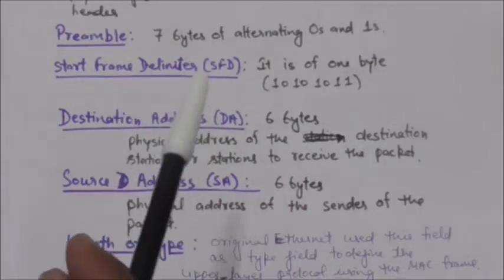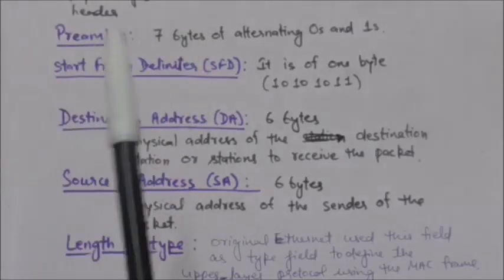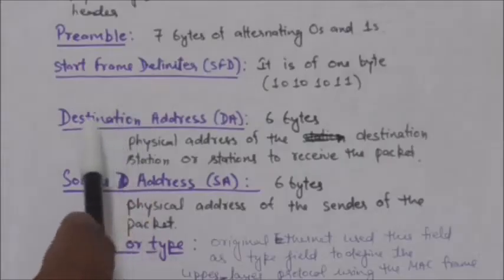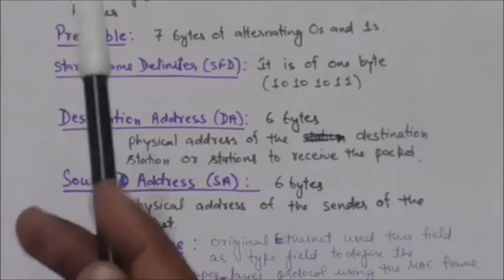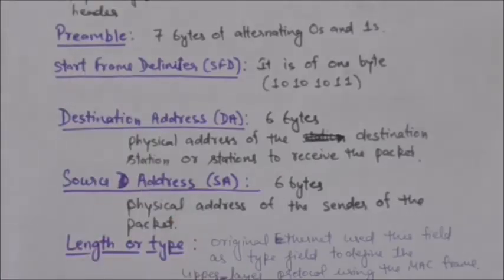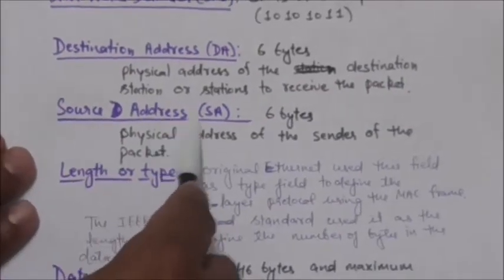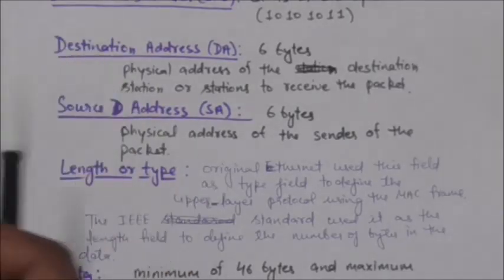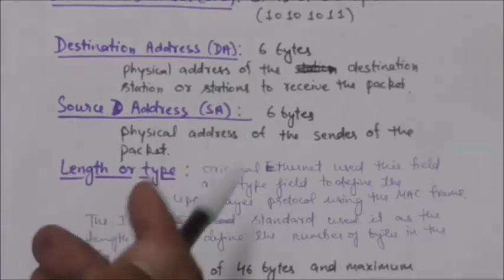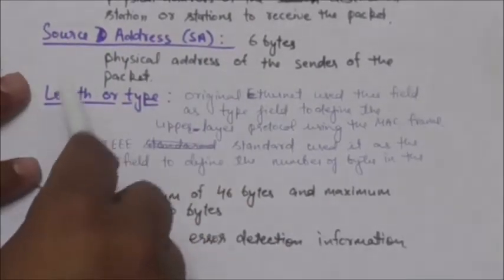The third field is the Destination Address. It is six bytes and contains the physical address of the destination station or stations to receive the packet. The next field is the Source Address, which is also six bytes and contains the physical address of the sender of the packet.